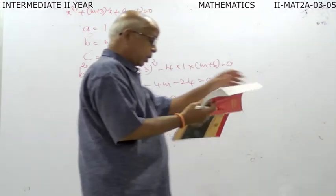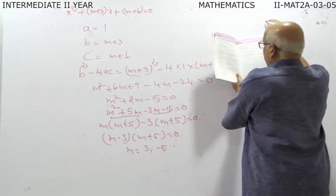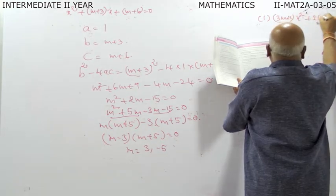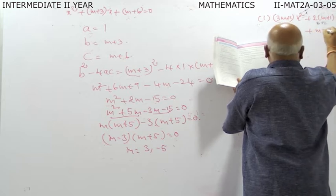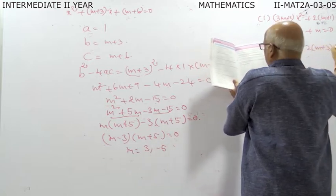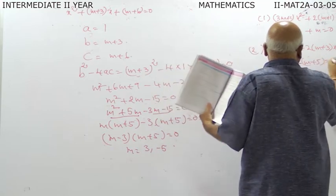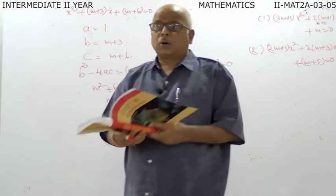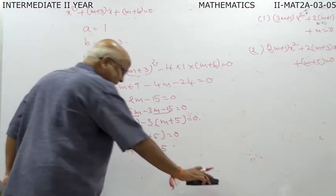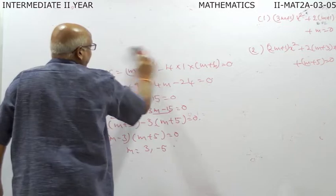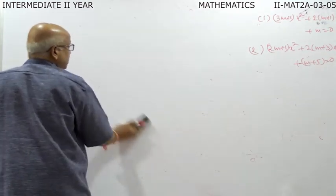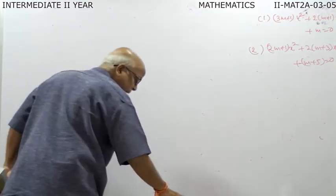In this model, two more problems are given as homework. First: 3m plus 1 into x-squared plus 2 into m plus 1 into x plus m equal to zero. Second: 2m plus 1 into x-squared plus 2 into m plus 3 into x plus m plus 5 equal to zero. If the equation is having equal roots, find m.